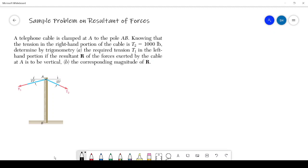As you can see this is the diagram of the problem. The problem is a telephone cable is clamped at A. So here at A our telephone cable is clamped to the pole AB. Knowing that the tension in the right hand portion of the cable is T2, so in this cable T2 the tension is 1000 pounds.